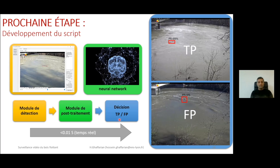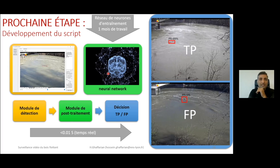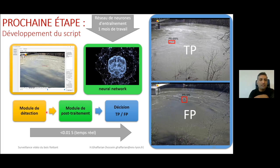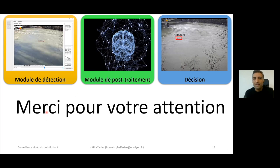We must pay attention that preparing the post-treatment steps — preparing the neural network, rectification matrices, etc. — can take between one and two months. But once all these matrices and steps are prepared, it takes less than one second to decide if a piece of wood is a true or false positive. When we combine these two parts — detection module and post-treatment module — we can run this model in real time.